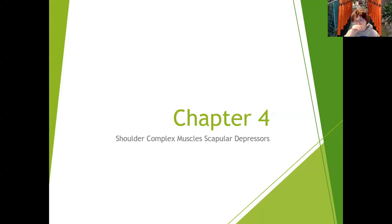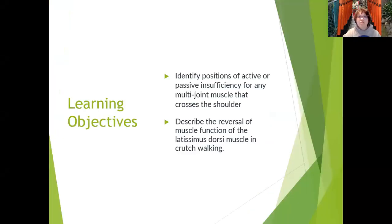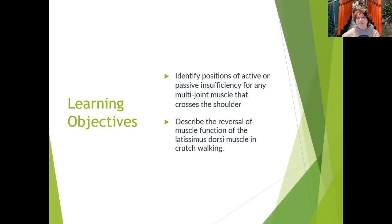They always go in pairs because you get out of anatomical position and then you've got to get back into it. Same learning objectives about knowing the origins, insertions, actions, and innervations. You want to be able to identify positions of active and passive insufficiency for any multi-joint muscle that crosses the shoulder.